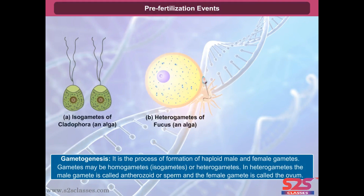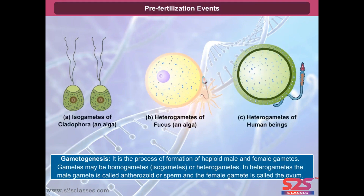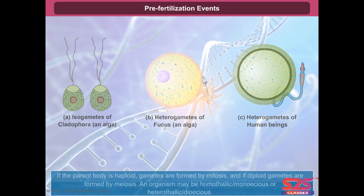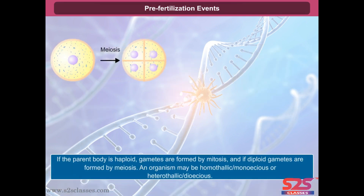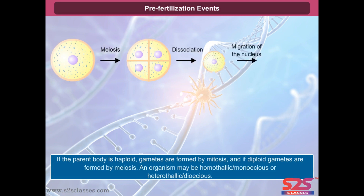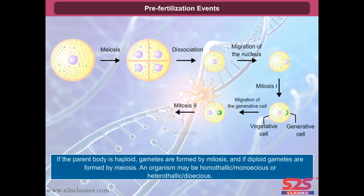Gametogenesis is the process of formation of haploid male and female gametes. Gametes may be homogametes, isogametes or heterogametes. In heterogametes, the male gamete is called antherozoid or sperm and the female gamete is called the ovum. If the parent body is haploid, gametes are formed by mitosis, and if diploid, gametes are formed by meiosis.